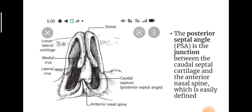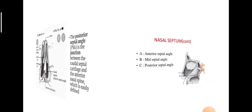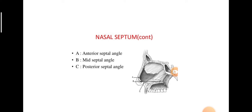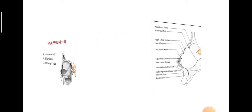So there are three components: the anterior septal angle, the posterior septal angle, and in between will be the mid-septal angle. These are the structures to be addressed in aesthetic rhinoplasty.